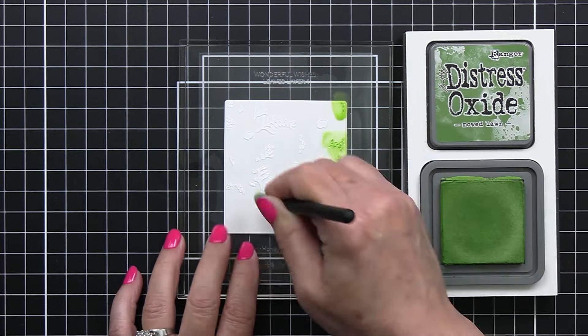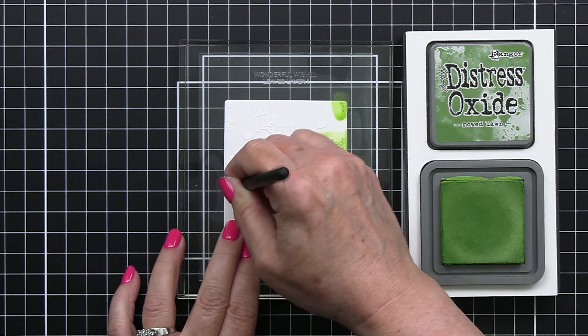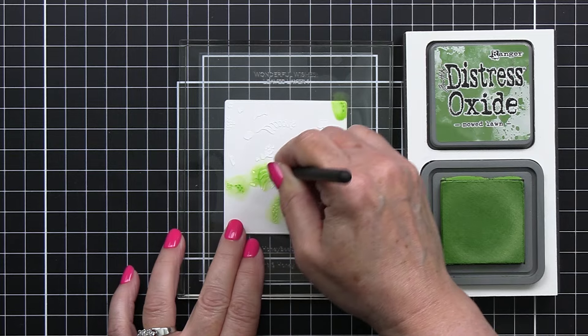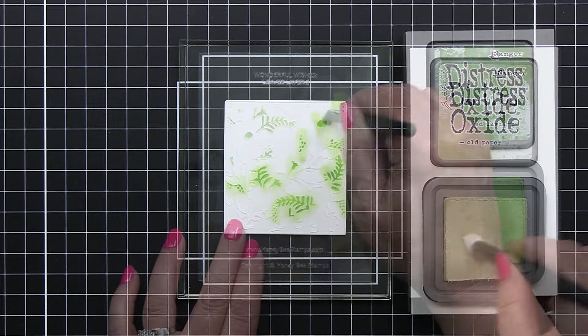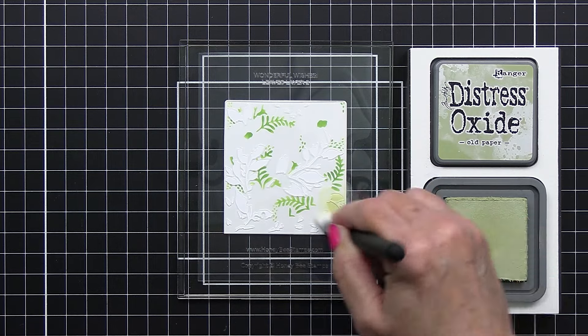Now it's really cool because the stencil actually has the defined edge for that square piece of cardstock, so it's super easy to line this up and I've got that first layer of green.